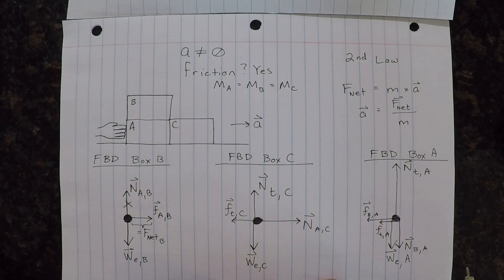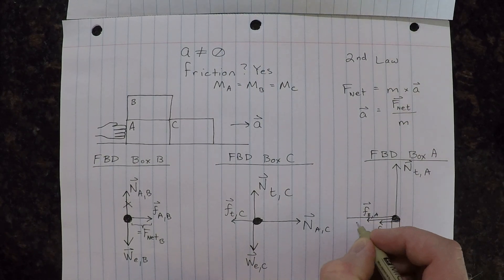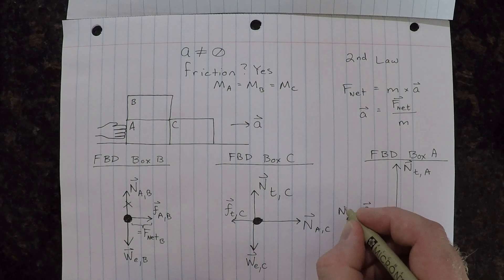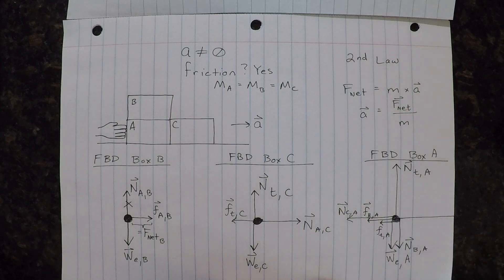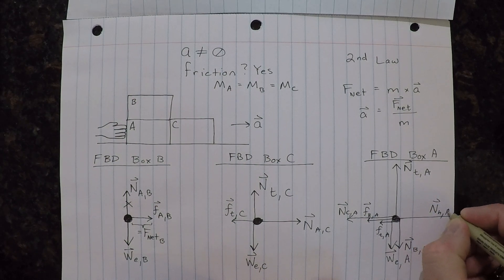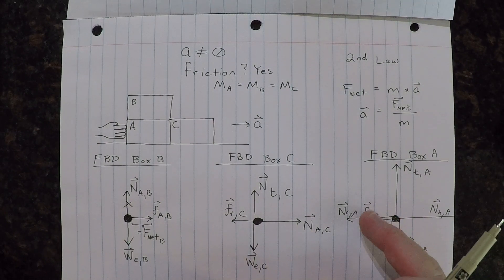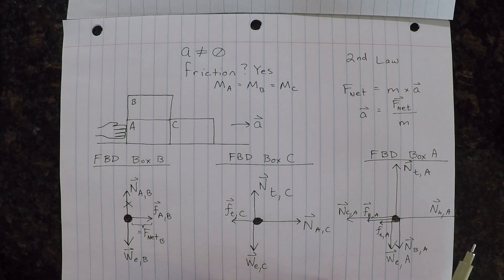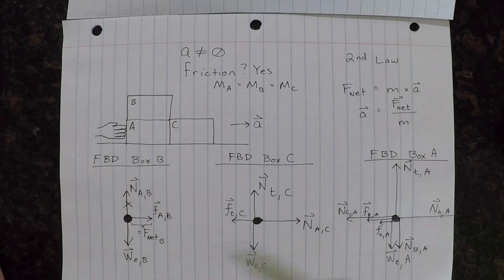There's also the normal force of C on A — remember, if A pushes on C, then C pushes on A with the same amount of force but in the opposite direction. So I'll draw the normal force of C on A. Finally, the force from the hand on A is a very large force, and we'll call this the normal force of the hand on A. The size of this force is large enough that if I subtract the sum of the three leftward forces from it, I get a net force which provides the acceleration for A and the system of blocks.